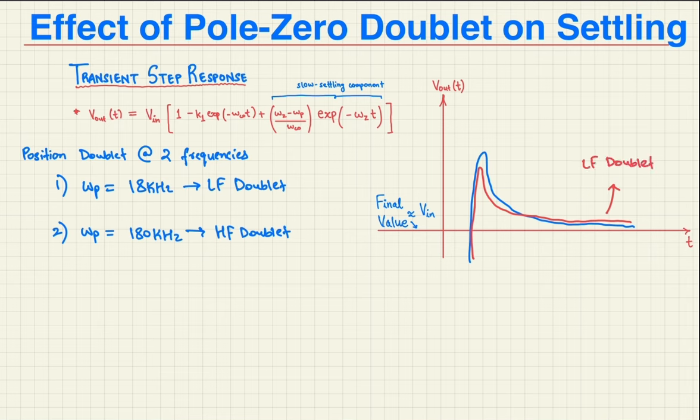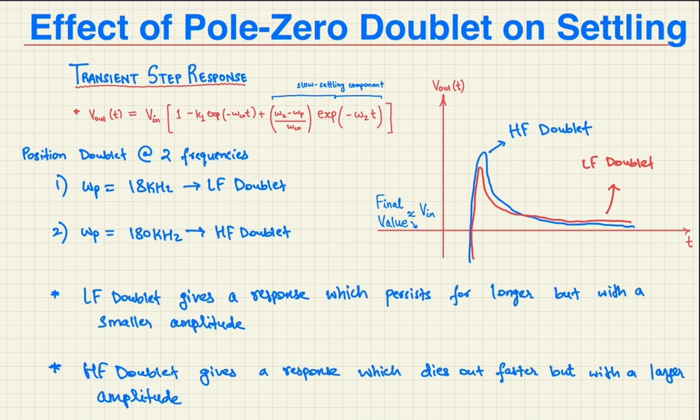On the contrary, the high frequency doublet resulted in a response that died out faster but with a larger amplitude. So for a very tight settling, for example 0.01% in their experiment, the slow decay of the low frequency doublet became problematic.